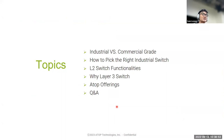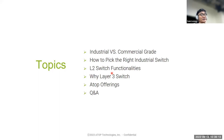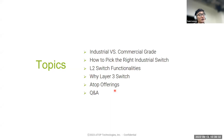First, I would like to introduce the difference between industrial and commercial grade — they are two different solutions for different problems and applications. Next, we'll talk about how to pick the right industrial switch. I'll also cover Layer 2 and Layer 3 switches — their functionalities and when to use each — and then go over some of our ATOP offerings, followed by Q&A.